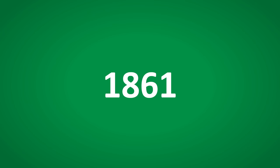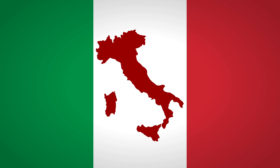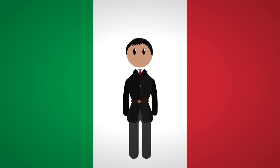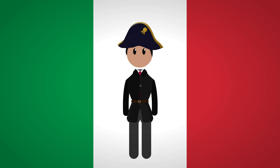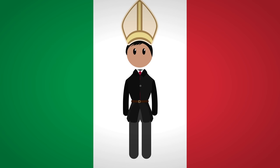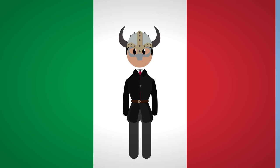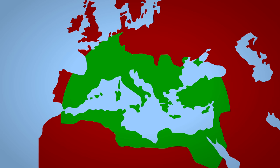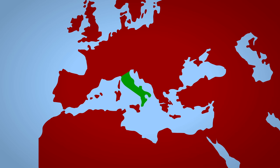Italy as a country did not exist until 1861. From the fall of Rome until the unification of Italy, the Italians were ruled mostly by foreigners who cared very little for Italy itself. Before unification they were ruled by the Germans, the Austrians, the Franks, the French, the Spanish, the Popes and even the Vikings. The Italians used to rule the Mediterranean, but before unification they couldn't even rule themselves.